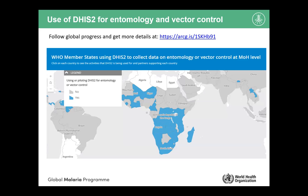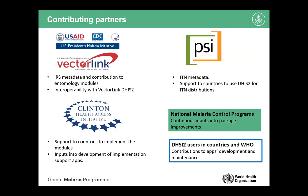This goes beyond just the standard DHIS2 modules, because some countries started using DHIS2 for entomology and vector control even before we thought about creating standard packages. Some other countries have data elements integrated into their health facility modules or data collection forms to report on things like LLIN continuous distributions. Some countries are using the standard modules and some others are not but are still using DHIS2 for entomology and vector control. In the interactive map you can click and find the details of how each country is using DHIS2 for entomology and vector control.